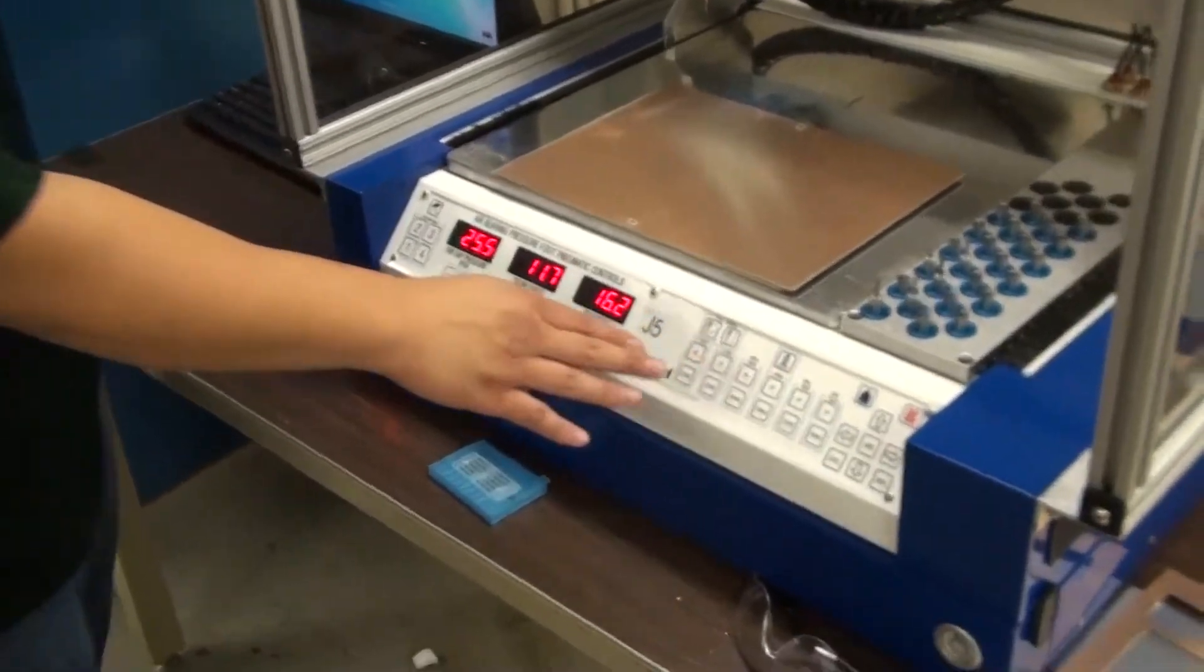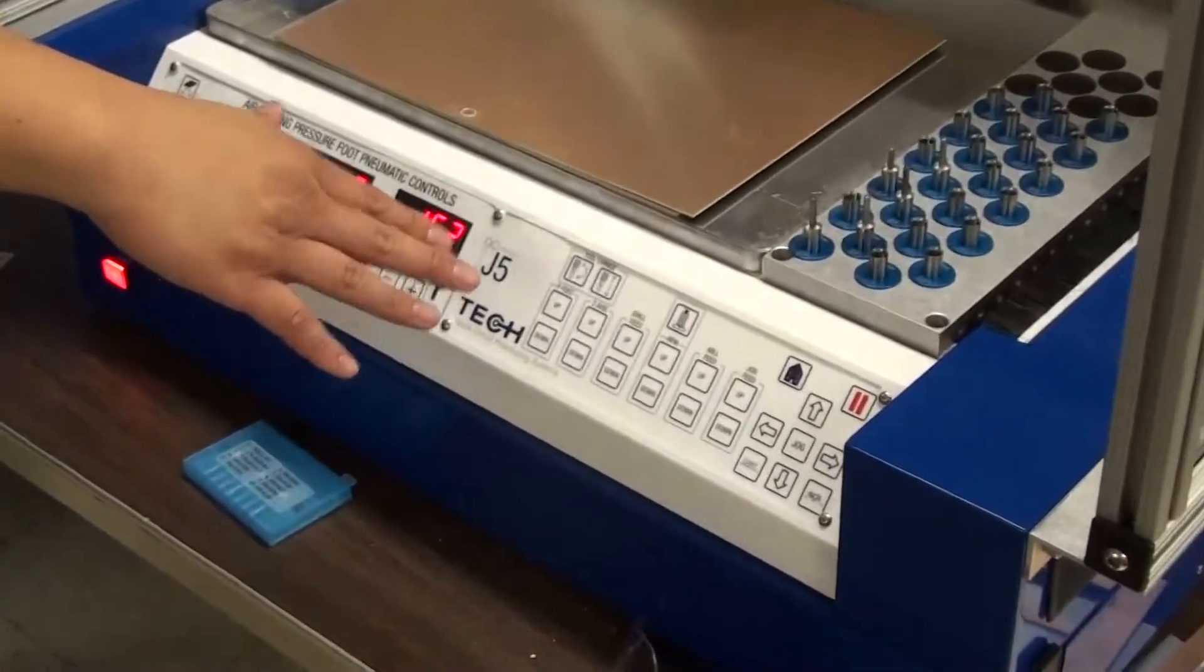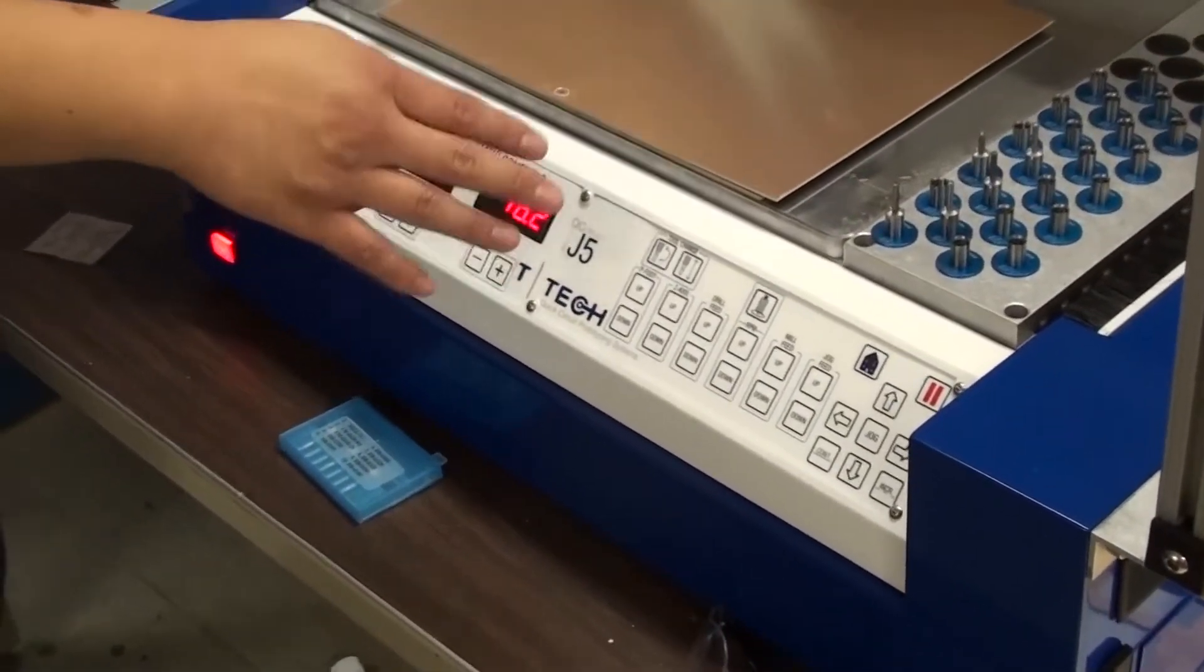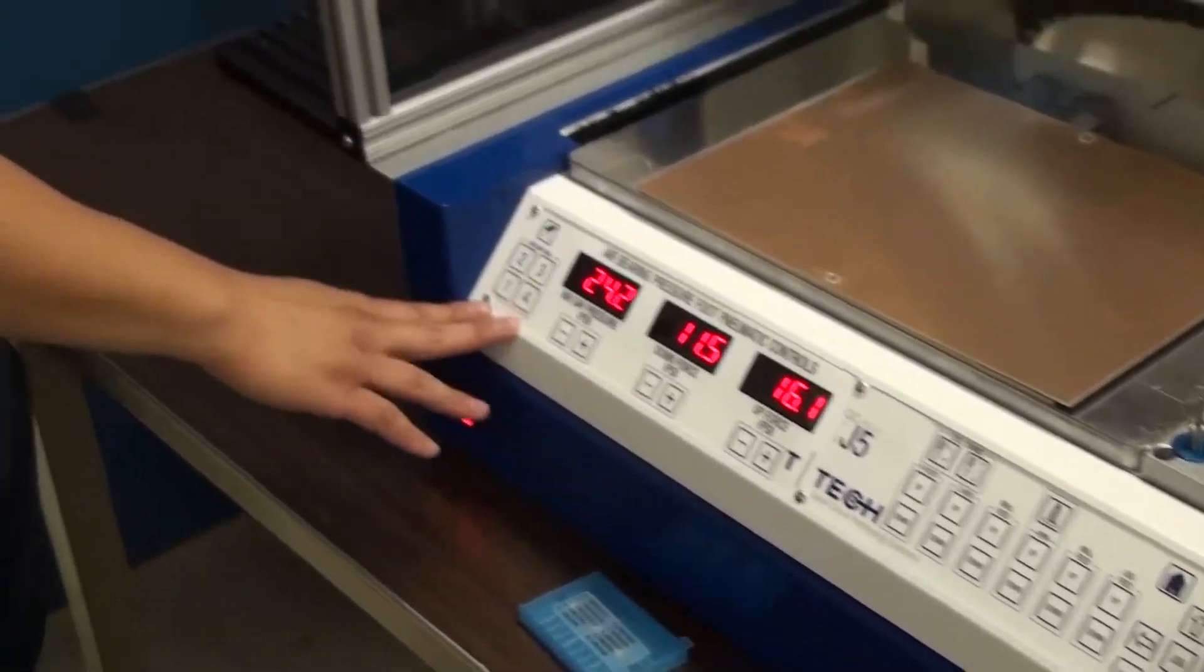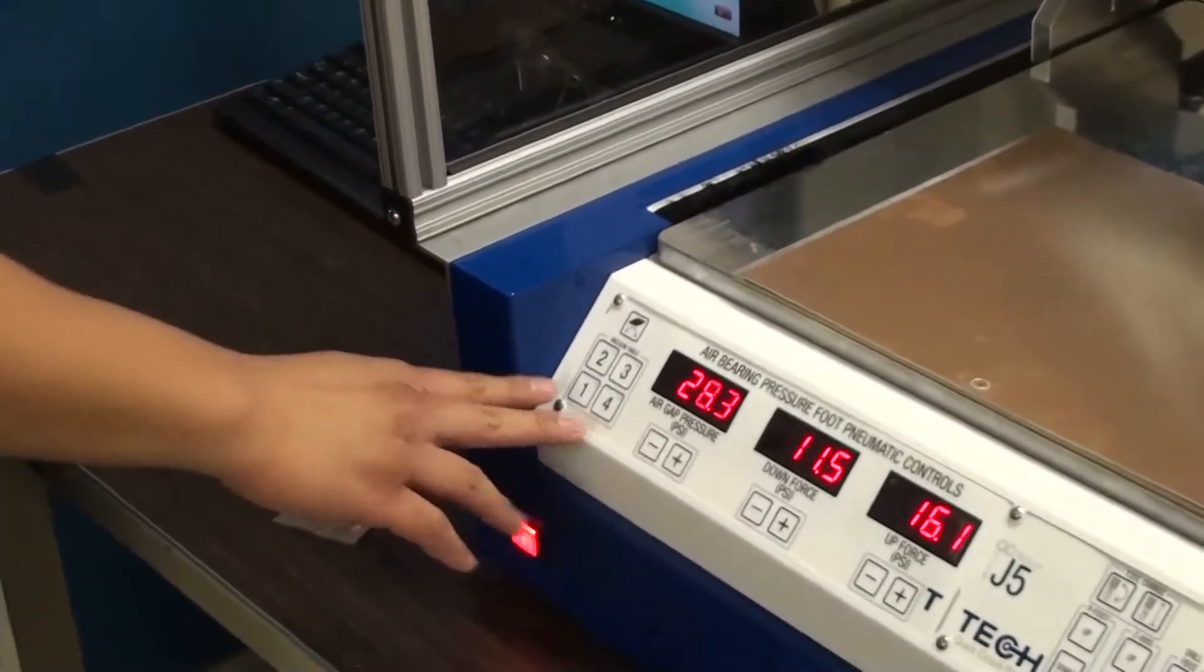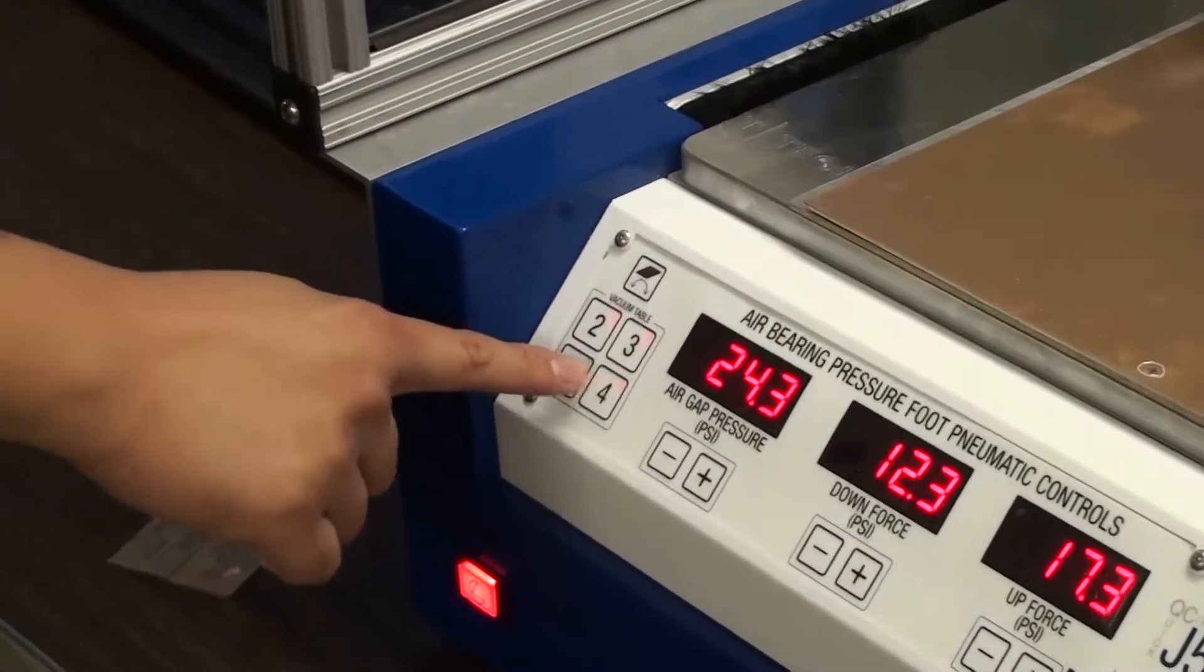These other front panel controls don't do anything until the computer is running the ISO Pro software that runs this machine. Over here, we have the vacuum table control. And we can enable and disable different sections of the vacuum table.